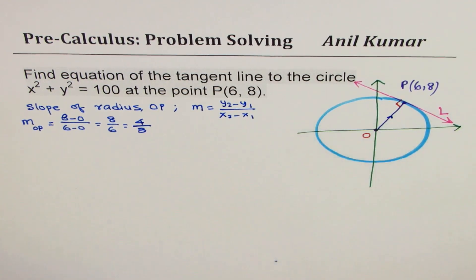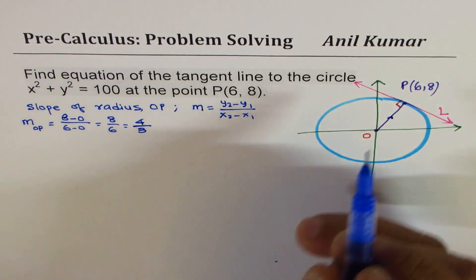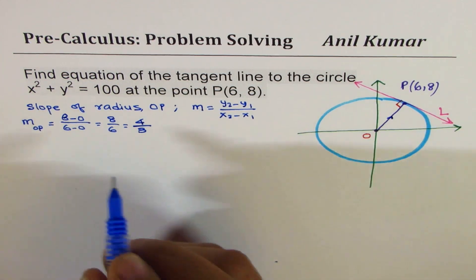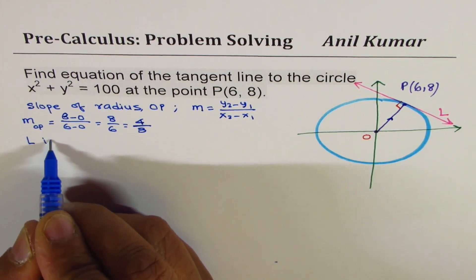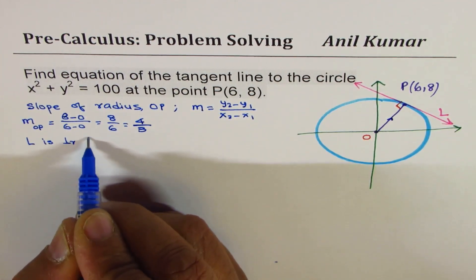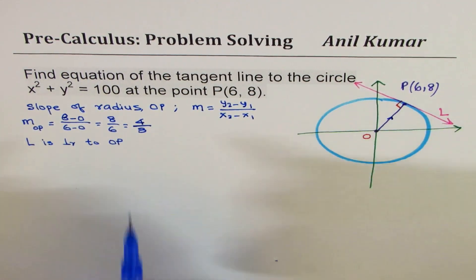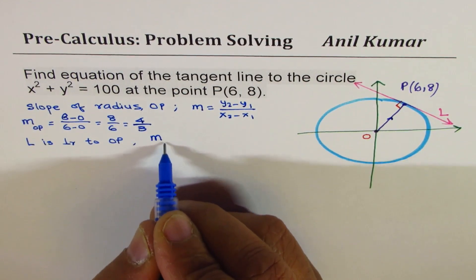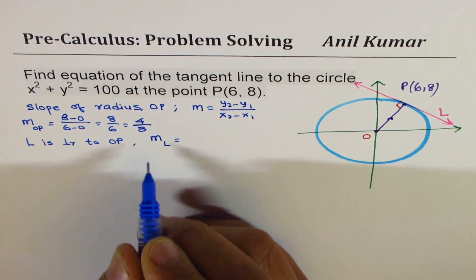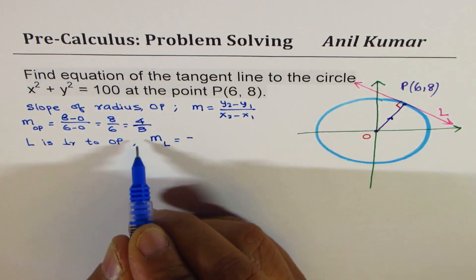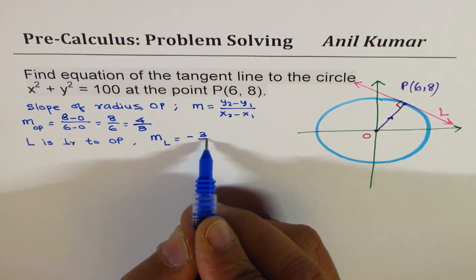So that is the slope of the radius. We are talking about this line. Now, since the line L is perpendicular to OP, what is going to be the slope of the line?